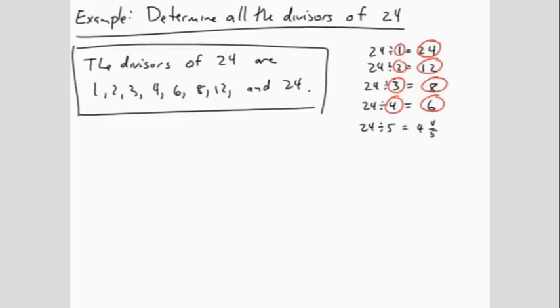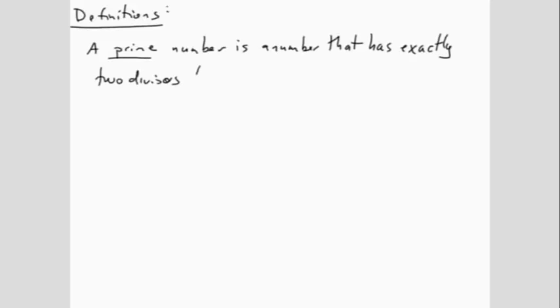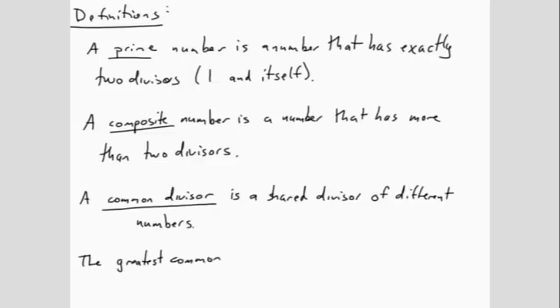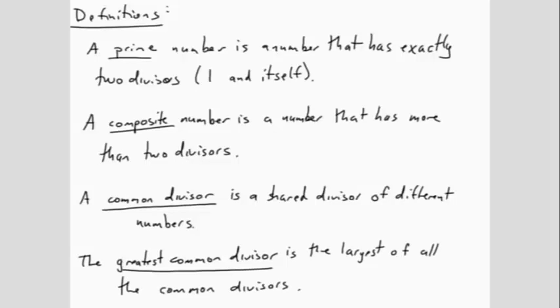There are a few more vocabulary terms for this section. Definitions: A prime number is a number that has exactly two divisors, namely one in itself. A composite number is a number that has more than two divisors. A common divisor is a shared divisor of two different numbers. And the greatest common divisor is the largest of all the common divisors. This last term, the greatest common divisor, will be very important when we start working with fractions.